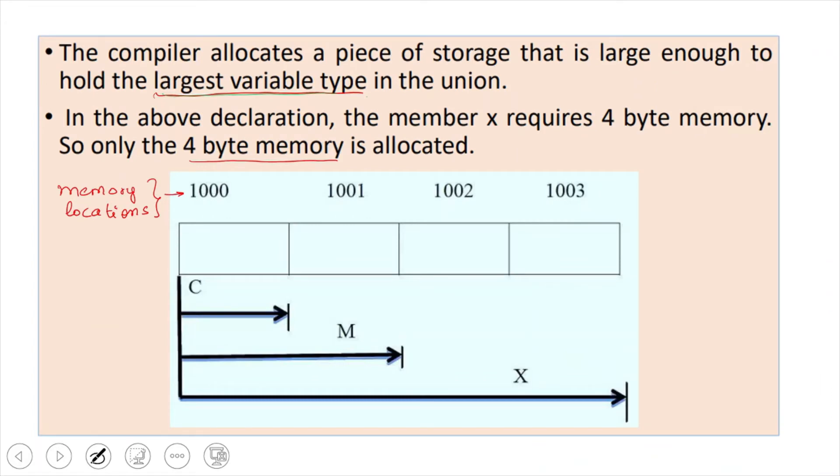Imagine these are the memory locations: one thousand, one thousand and one, one thousand and two, and one thousand and three. C is a character, so it needs only one location. M requires two bytes to store, and X requires four bytes. So, totally, it will check and find that the highest byte that is required is that of X, and it will reserve four bytes of memory.